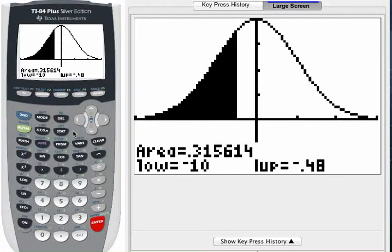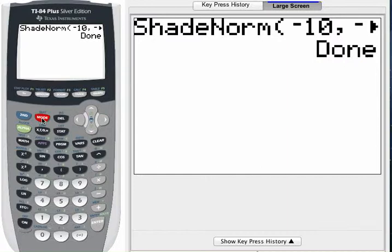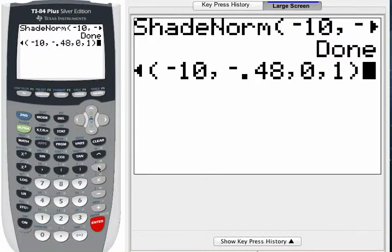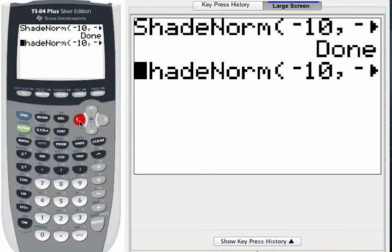So one last thing to consider if you are using an older style calculator and there's nothing wrong with that, you're not going to see the screen where you're asked to enter a lower boundary and an upper boundary and then highlight draw. Instead, what you will see, let me press second enter and bring back the last command that I put into the calculator. This is what you will see on the home screen. You will see the shade norm command. So you will still enter the lower and upper boundaries. But when you do that, you need to enter the lower boundary first. So here it is on the screen. You would enter that negative 10 first as in the last example.